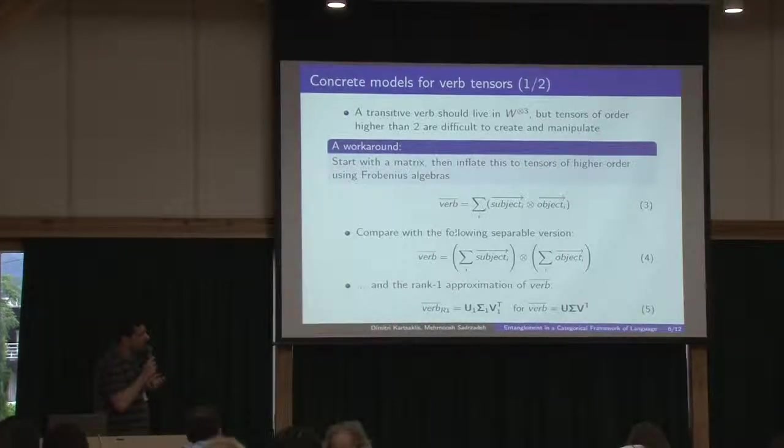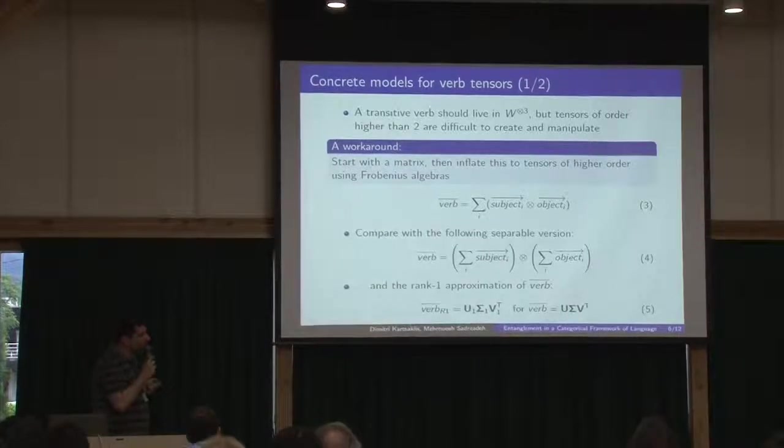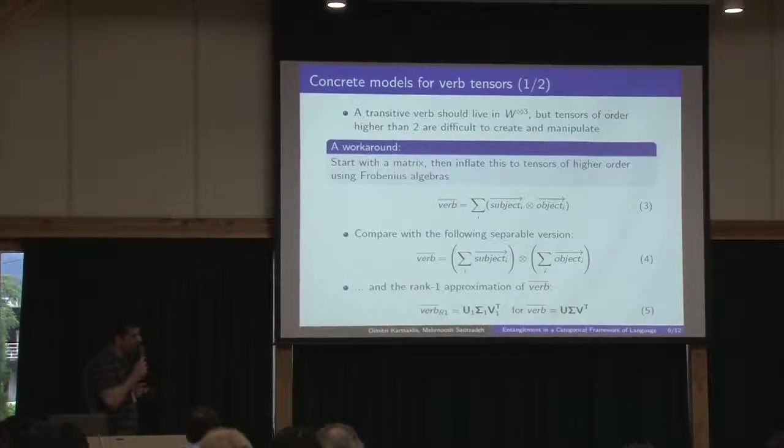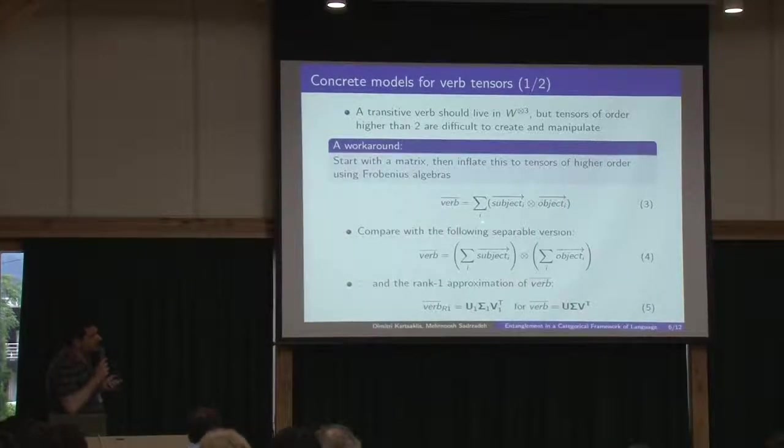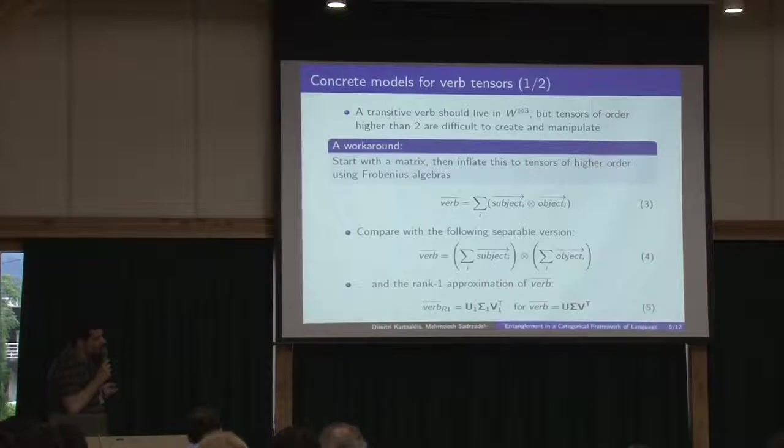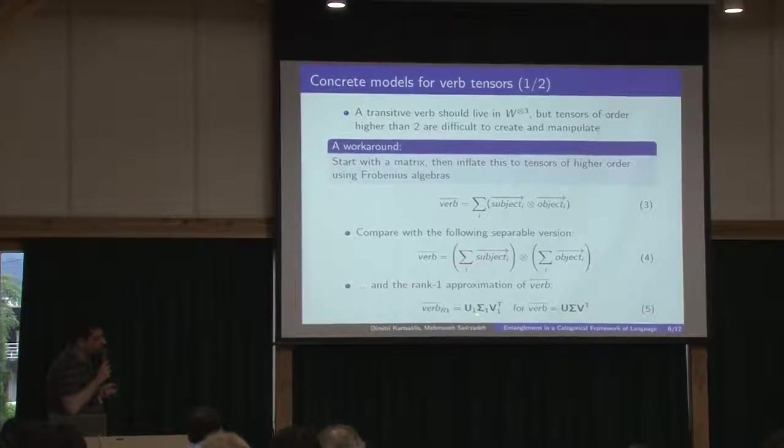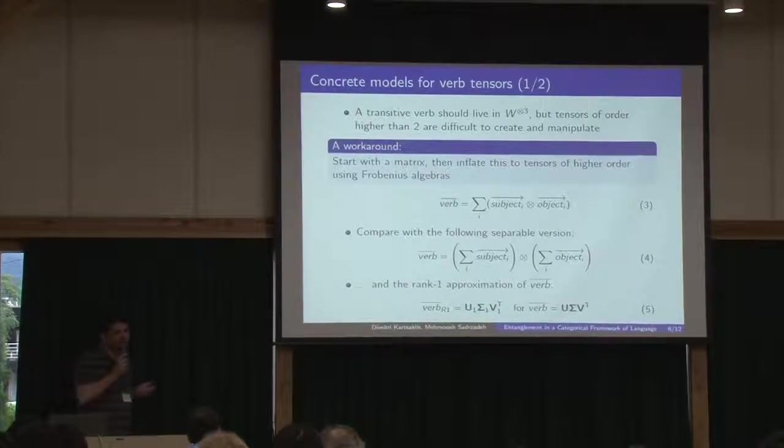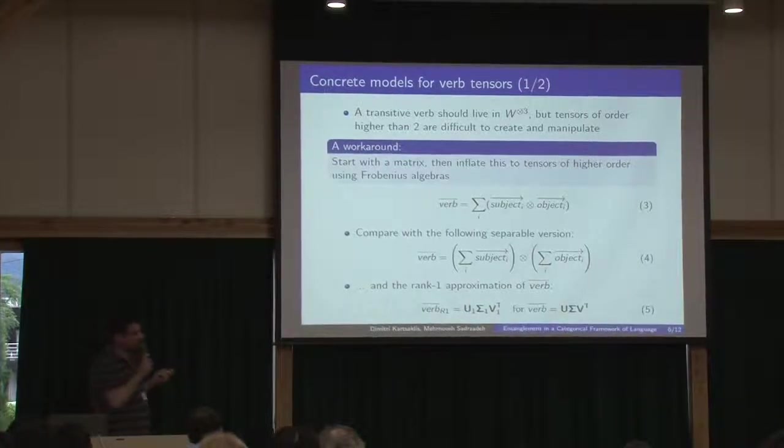So basically we create models based on this equation, and we also create the rank one approximation of the verbs by creating the matrix like this, and then we take the SVD of the matrix and reconstruct the matrix using just the highest eigenvalue and the corresponding left and right singular vectors.